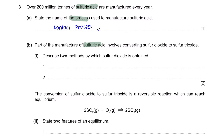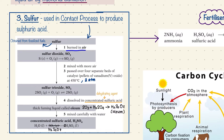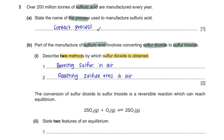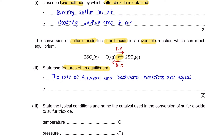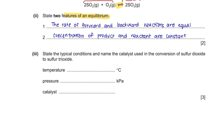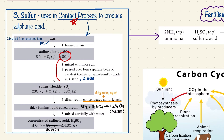Question B Part 1: Describe two methods by which sulfur dioxide is obtained. Firstly, sulfur is burnt in air, and secondly, sulfur ores are roasted in air. Part 2: State two features of an equilibrium. The forward and backward reactions must occur at equal rates. Also, the volume, mole, or concentration of reactants and products must be constant. Part 3: The catalyst used in the conversion of SO₂ to SO₃ is vanadium oxide, the temperature is 450°C, and the pressure is 2 atmospheres.